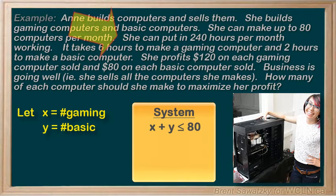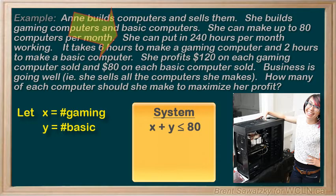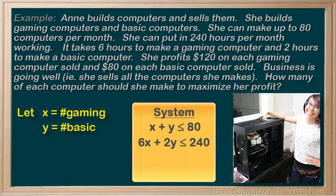Looking back at the question, we see that she can put in up to 240 hours per month. Each gaming computer takes six hours to build, so the total time working on gaming computers would be 6x. The basic computer takes two hours to build, so the total time on basic computers would be 2y. Adding those together, it has to be less than 240. That's our second inequality.